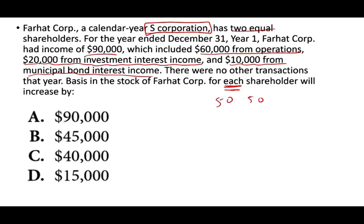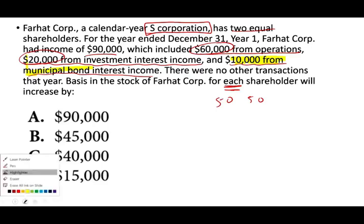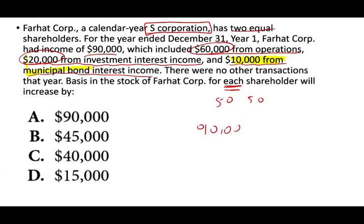What do you need to know? Any income, regardless of its source, increases the basis. We have $60,000 from operations, $20,000 from investment interest income. And notice — I tried to trick you. The $10,000 from municipal bond interest is not taxable, but although it's not taxable, it still increases your basis. Therefore, the total basis will increase by $90,000. For each shareholder, we divide by two, equal to $45,000.